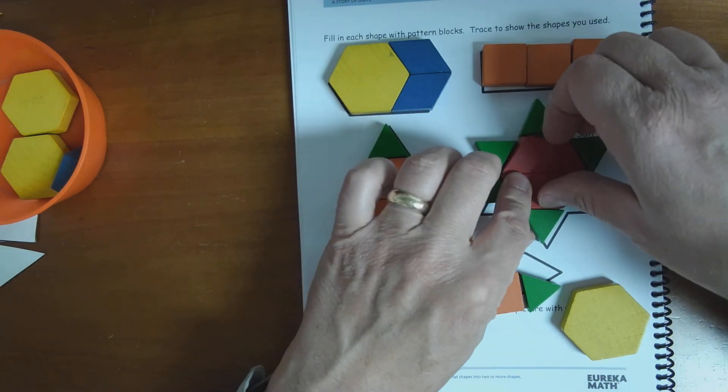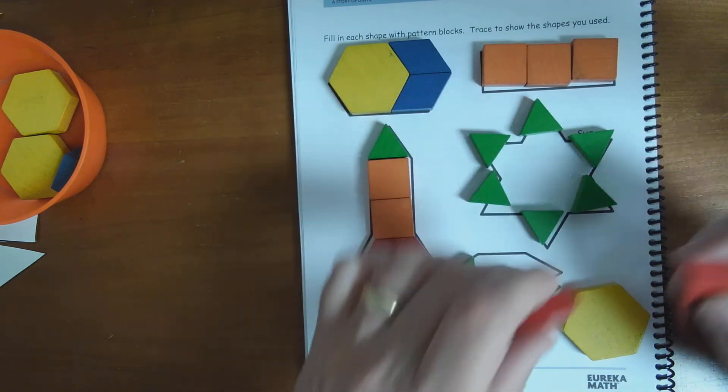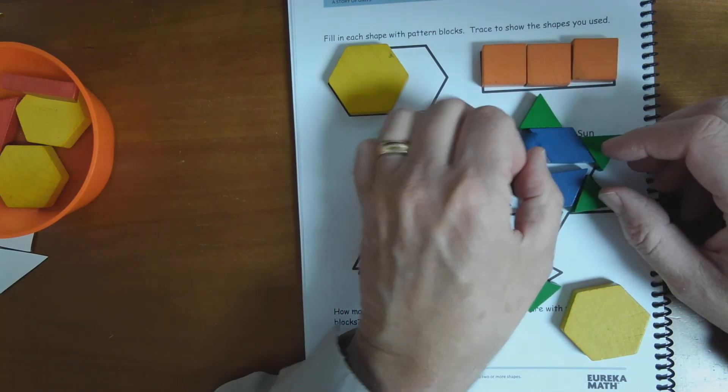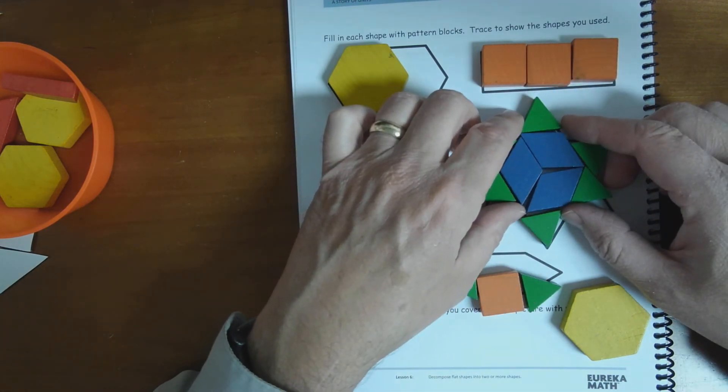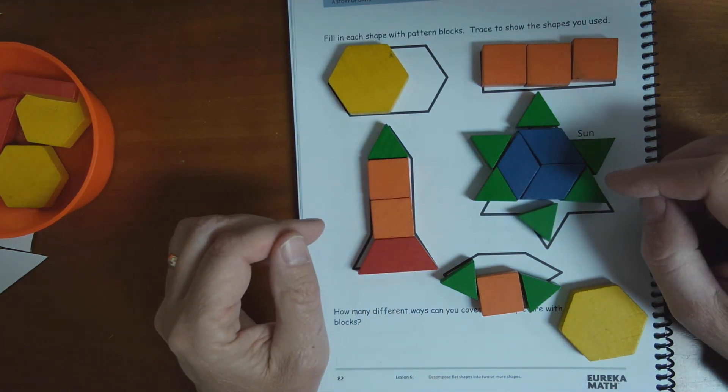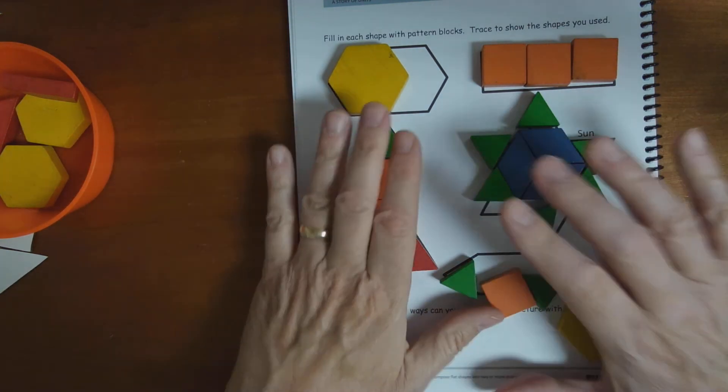And if I took two red ones out, I could put three blue ones. Right? If I took the blue ones out, I could put six green ones in the middle there too. All right. Anyway,